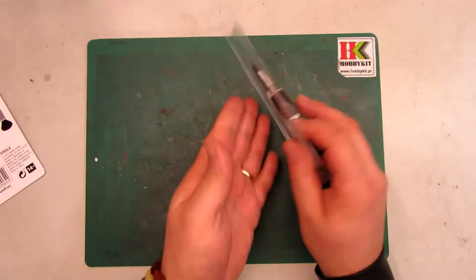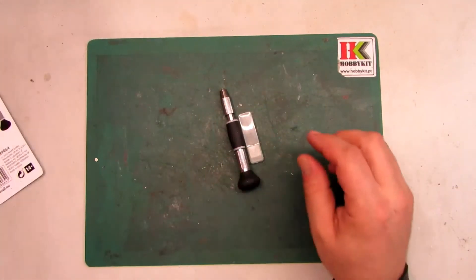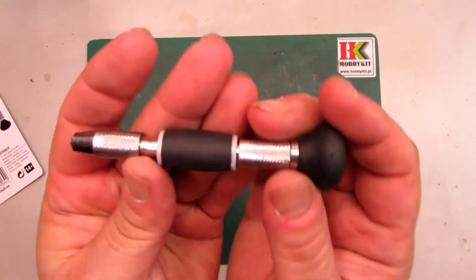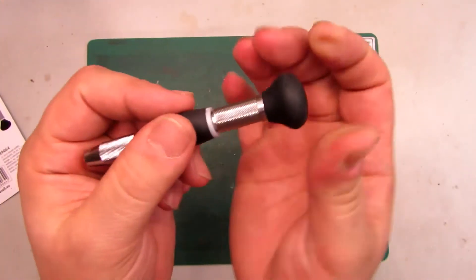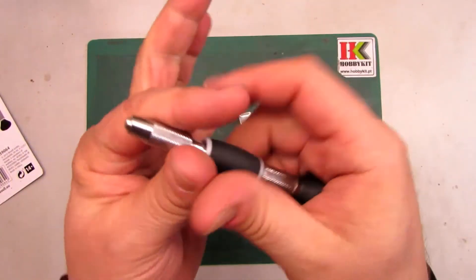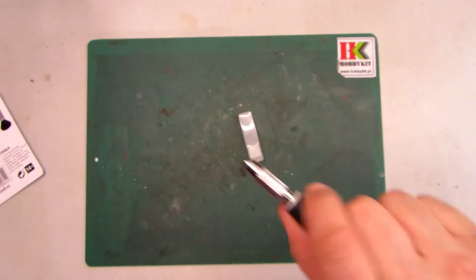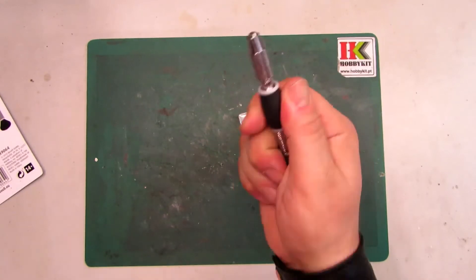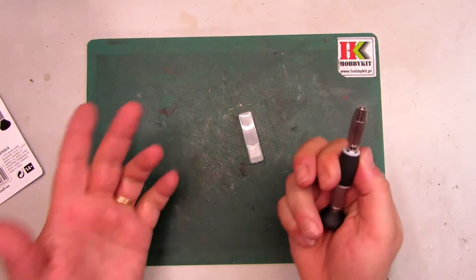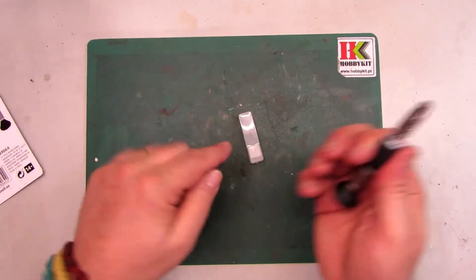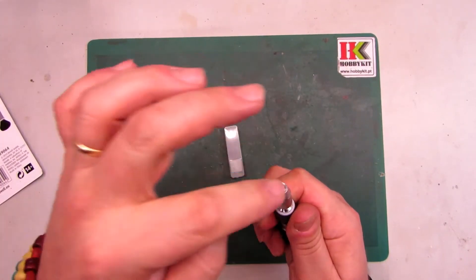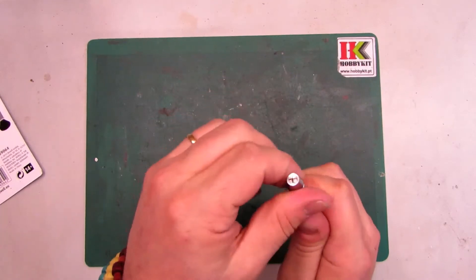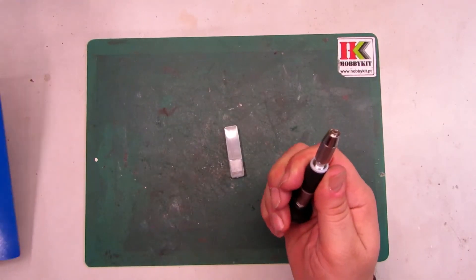So let's open and show what is inside. As you can see we got here the hand drill. This is with a little rubber so it's comfortable for our hands so you can drill just with one hand. And if you want to put any drill here just open, put and then close.